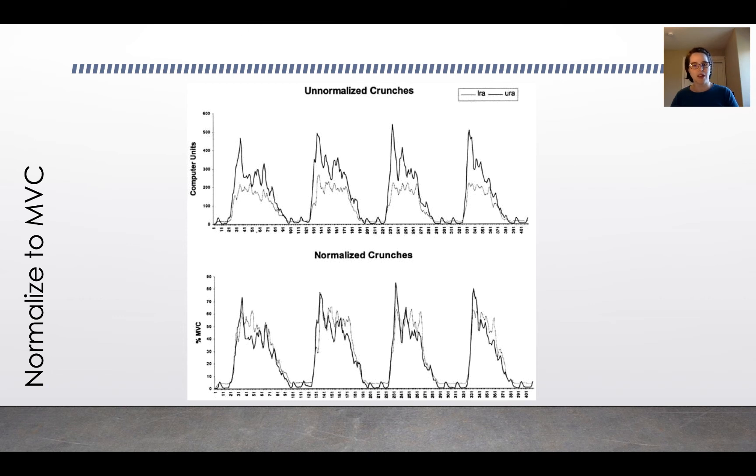So normalizing helps you compare one data set to another by dividing your activity by some predetermined activity. If you wanted to do that in MATLAB you would need a maximum voluntary contraction and then you would need to divide every value in your data set by the value for your max voluntary contraction, which is actually probably an average value.